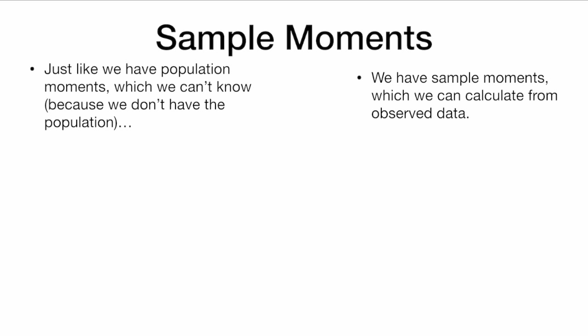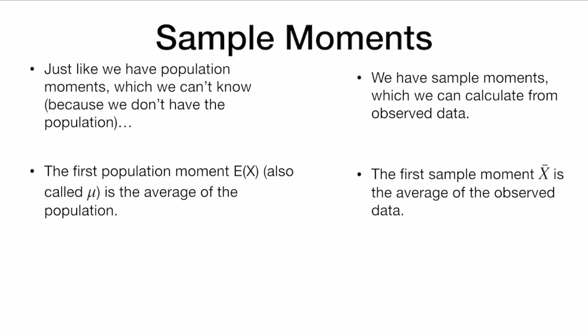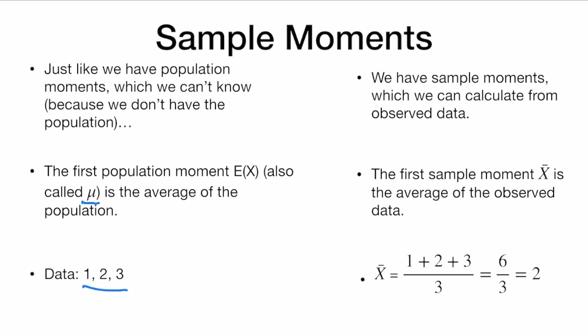Just like we have population moments, which we can't know because we don't have the population, we have sample moments, which we can observe in the data. The first population moment, E[X], also called mu, is the average of the population, which we don't know. But the first sample moment, x-bar, is the average of the observed data. So if I see data 1, 2, 3, I can calculate the sample average x-bar, which is 2. The average of this data is 2, but I don't know what mu is because I don't have the whole population.